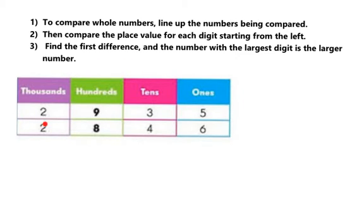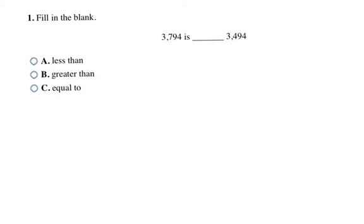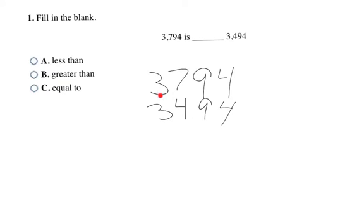For example, comparing 3794 to 3494: I line those numbers up digit above digit, starting from the ones place. Looking at each place value column, both have threes in the thousands, but the seven and four in the hundreds column are different. Seven is bigger than four, so 3794 is the bigger number. Drawing my symbol eating the bigger number, I get a greater than symbol — 3794 is greater than 3494.